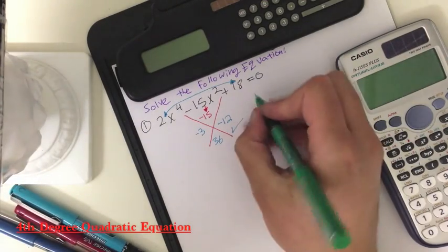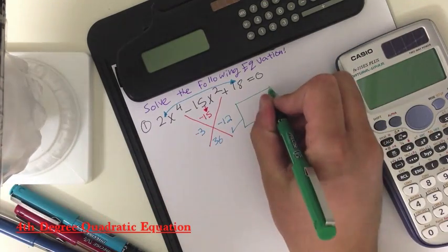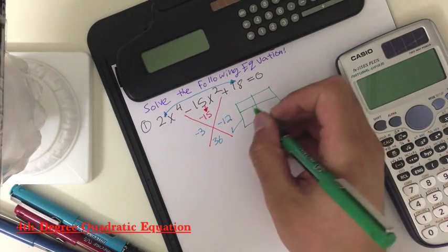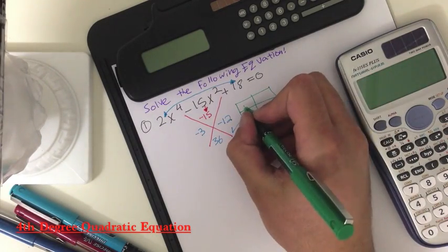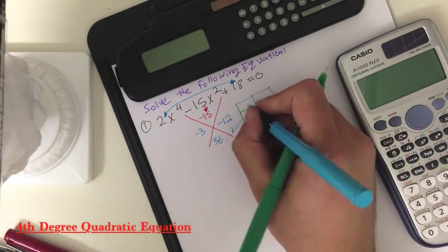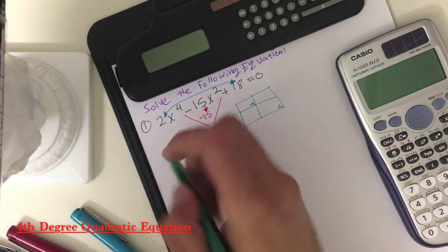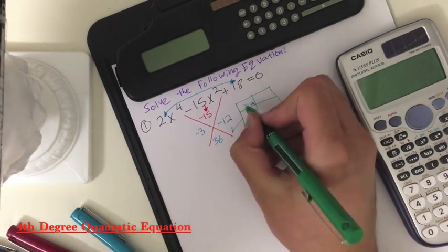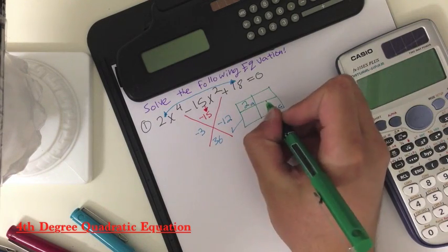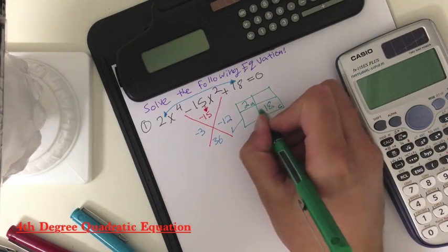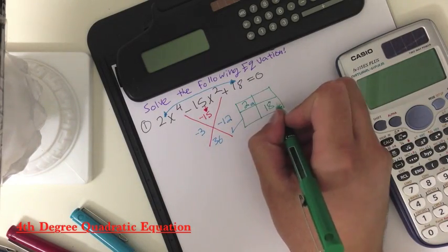Now we will be doing the box method. So you just do something that has 4 squares just like the Punnett square. And then you bring your A term and your C term. The A term is the first one that comes in, so that is 2 in this case, and the C term is the last term, in this case it's 18. So it's AC.